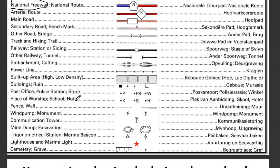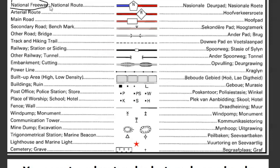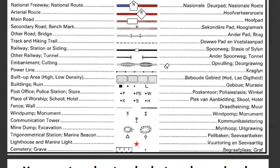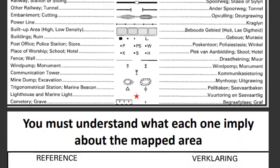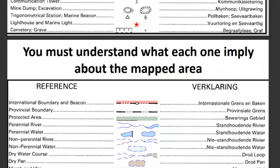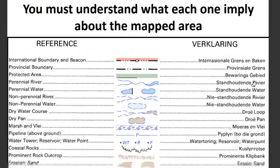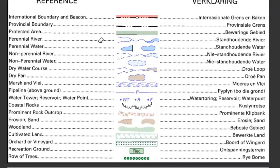That is how you need to interpret the symbols — the reference assists us to understand what is on the map. Please don't treat the reference as irrelevant. It is very relevant for you to understand and pass. We must understand what each symbol implies about the mapped area. There are other symbols too that you need to know.